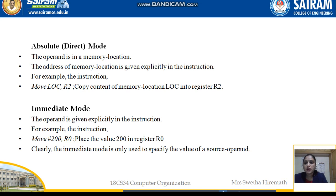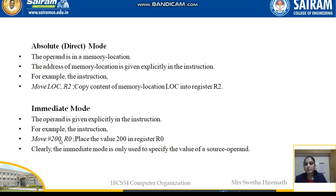The next type is immediate mode, where the operand is given explicitly in the instruction as a direct value. For example, if you want to move the value 200 to register R0, you write it as #200. The hash symbol indicates immediate mode — whatever value follows the hash will be moved to the register.